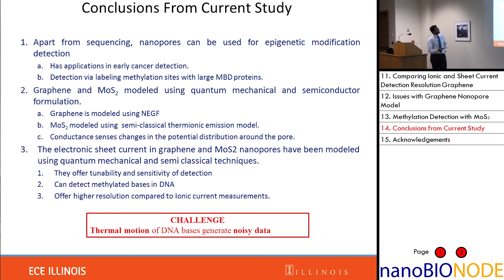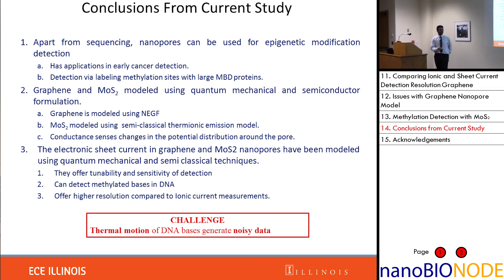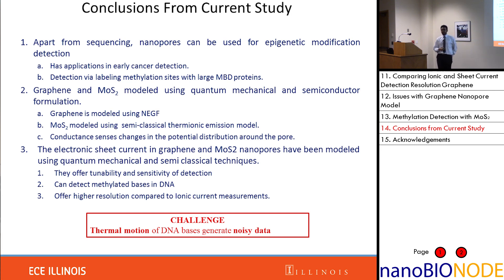My conclusions are that apart from sequencing, we can use solid-state nanopores for epigenetic modification detection by labeling methylated sites with large MBD proteins. We model graphene and MoS2 using atomistic and semiconductor methods, and both can detect methylated bases by plotting the change in conductance as a function of time. The most important challenge is the thermal motion of DNA, which creates noisy data — something our community is actively working to address by slowing DNA translocation and improving SNR.